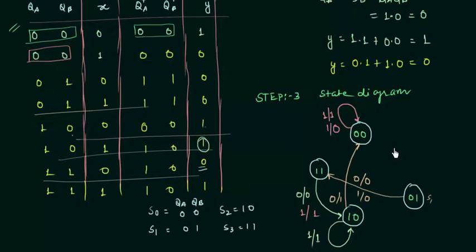This is the state diagram for our circuit. All three steps are now clear: step 1 finds input and output equations, step 2 builds the state table, and step 3 draws the state diagram. These three steps are required to make the state diagram of any sequential circuit. If you have any doubts you can ask in the comment section. See you in the next one.